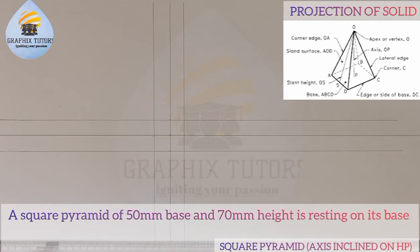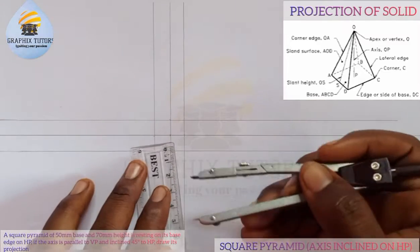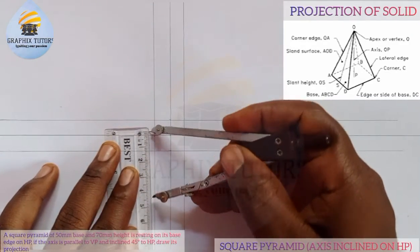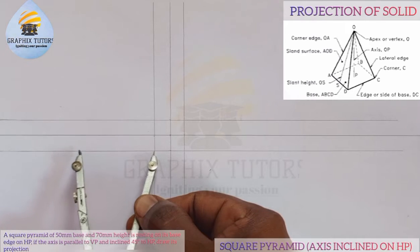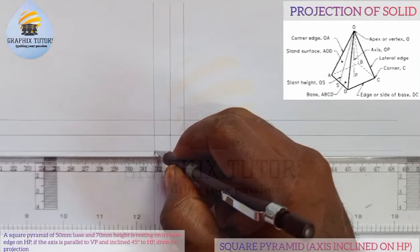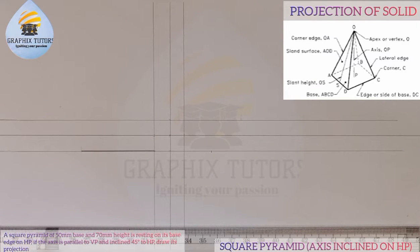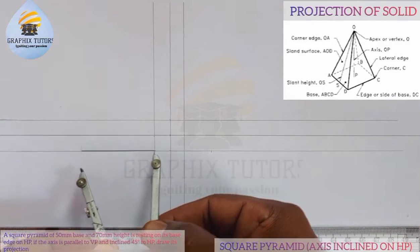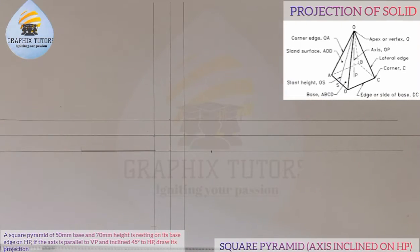We're told the plan has a 50 millimeter base, so I'll take my compass and draw my plan here. I'll measure 50 directly — from 0 to 5 is 50 — and I'll start from this reference point and mark it. From here to here is 50, and similarly from here to this point is also 50, and I'm going to mark those points.